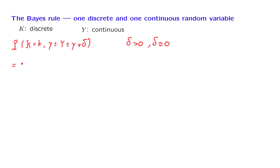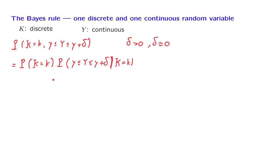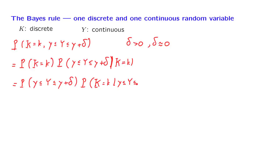Now we use the multiplication rule. The probability of two events is equal to the probability of the first event times the conditional probability of the second event given that the first event has occurred. But we can use the multiplication rule in any order, so the probability of two events happening can also be written as the probability that the second event occurs times the conditional probability that the first event occurs given that the second event has occurred.